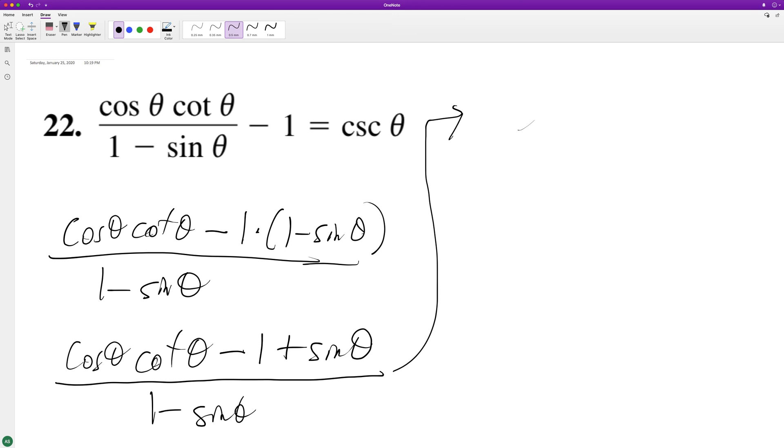So this can become cosine squared theta. I'm converting cosine times cotangent over sine theta.